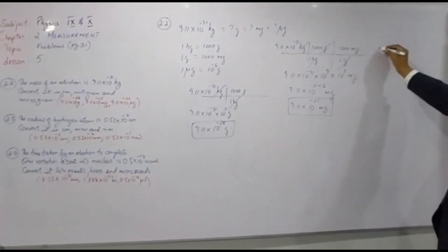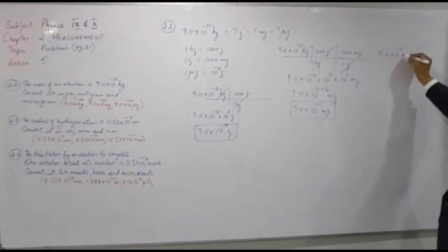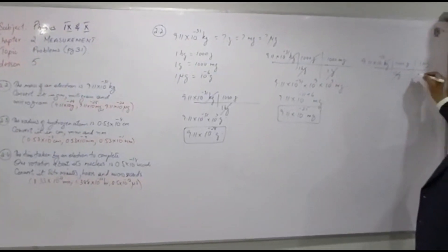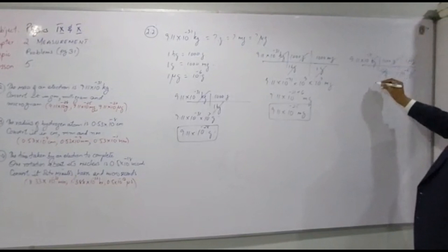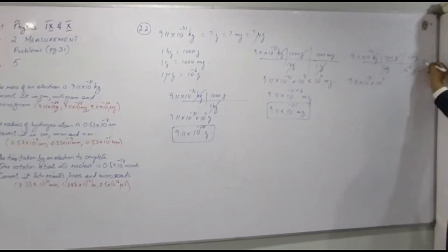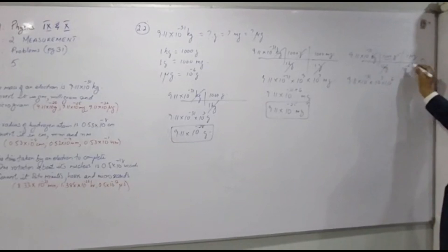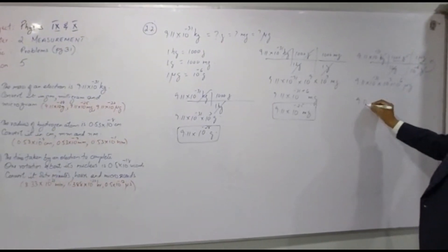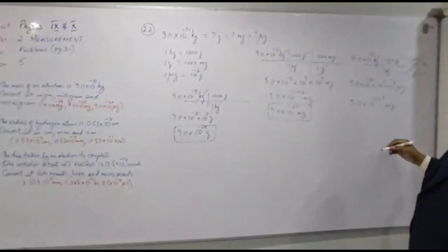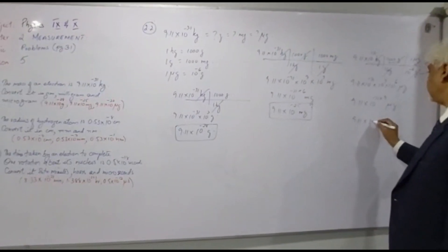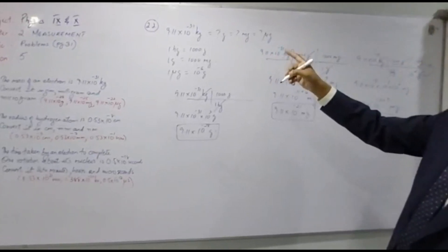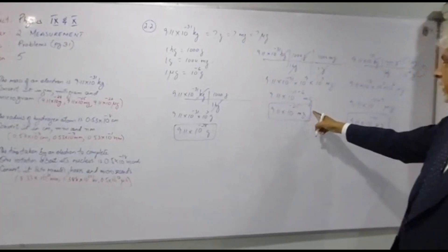Finally, converting into micrograms: 9.11 times 10 to the power minus 31 kilograms. 1 kilogram is equal to 1000 grams, and 1 microgram is 10 to the power of minus 6 grams. So we have 9.11 times 10 to the power minus 31, times 10 to the power 3, times 10 to the power 6 micrograms. Minus 31 plus 6 plus 3 gives minus 22, so the answer is 9.11 times 10 to the power of minus 22 micrograms. Hence I have converted 9.11 times 10 to the power of minus 31 kilogram into grams, milligrams and micrograms.